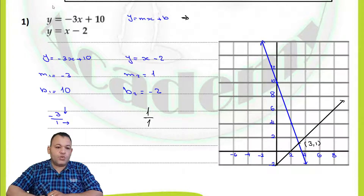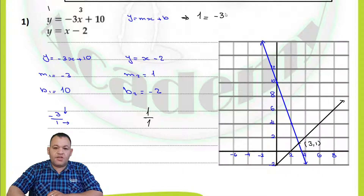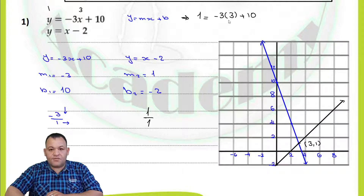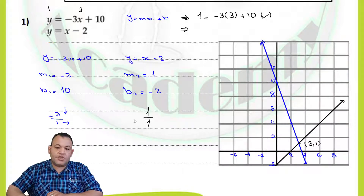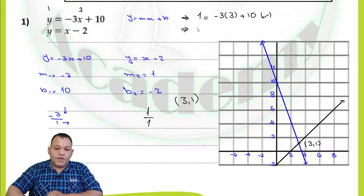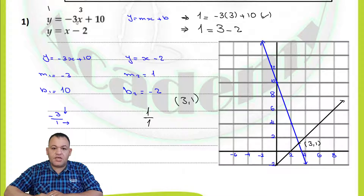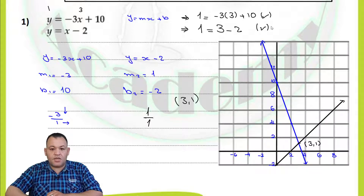We can check: for the first equation, y equals 1 and x equals 3. So 1 equals negative 3 multiplied by 3 plus 10. Negative 3 times 3 equals negative 9, plus 10 equals 1. The left-hand side equals the right-hand side, so (3, 1) satisfies the first equation. For the second equation, substituting x equals 3 and y equals 1: 1 equals 3 minus 2, which equals 1. The left-hand side equals the right-hand side, so the solution of the system is (3, 1).